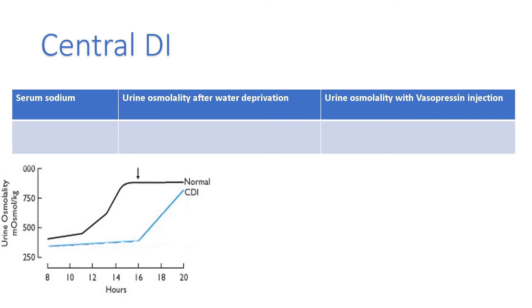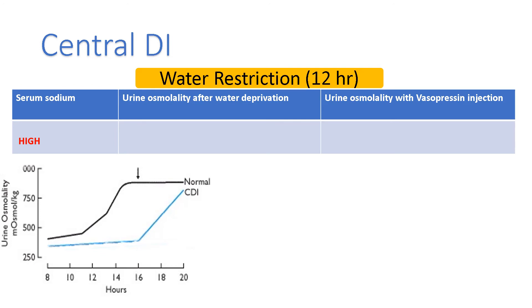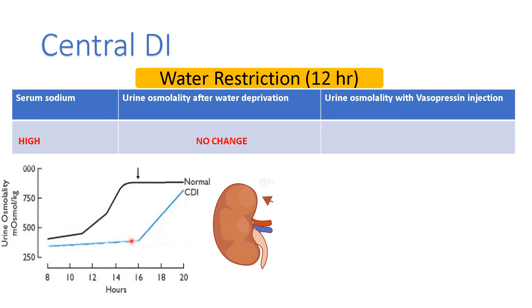At baseline, these patients are excreting a lot of free water and cannot reabsorb it into the blood, so their serum sodium goes high. After water restriction, because they are not producing enough ADH, urine osmolality stays the same — no matter how high serum osmolality goes, the urine continues to excrete free water with low osmolality. This indicates the kidney has not received enough ADH to respond.